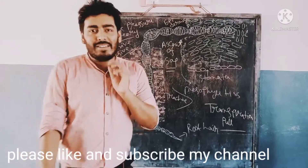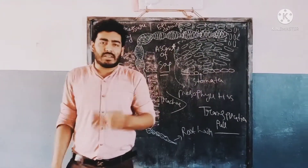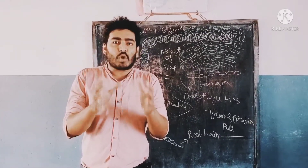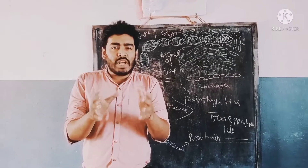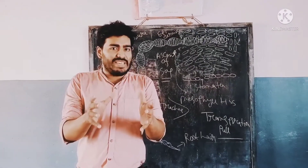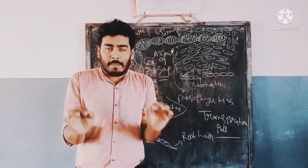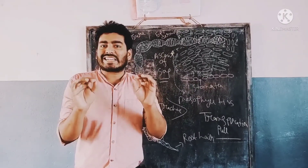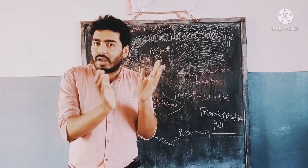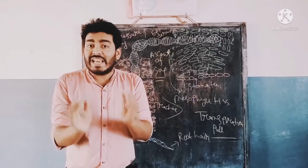Hello everyone, welcome to my channel. Today's topic is transpiration. Transpiration is the process by which water vapor comes out from the outer surface of trees, like leaves and plant stem.